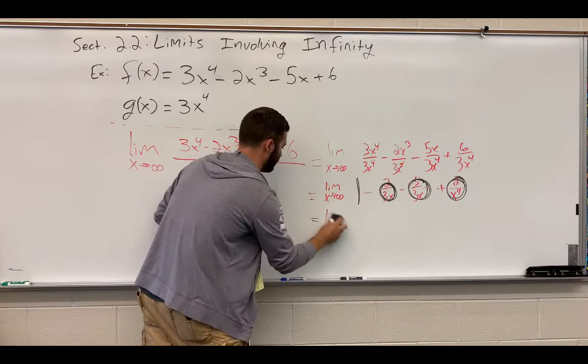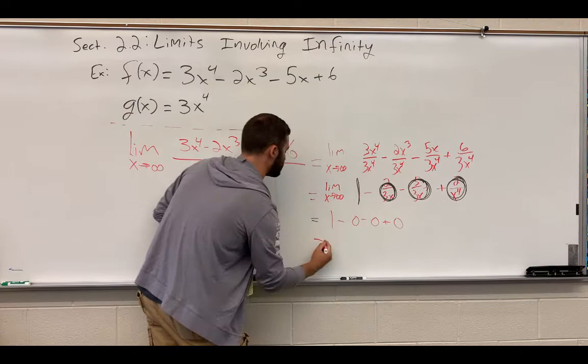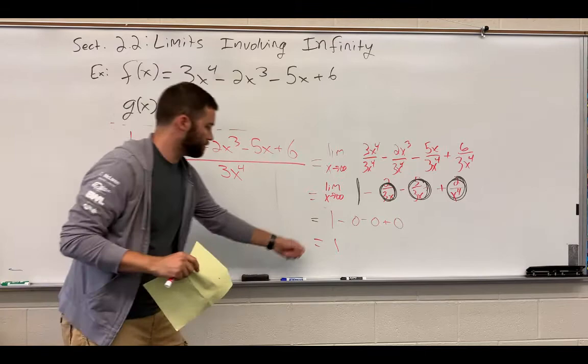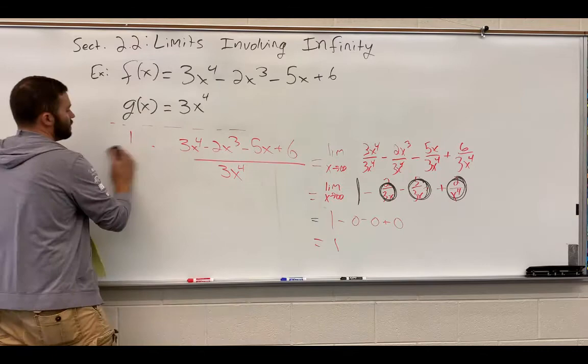So, I end up with 1. And, therefore, that g of x must be an end behavior model. Because, the limit as x approaches infinity of the ratio of f over g ends up being 1.